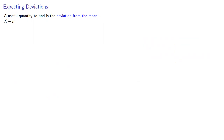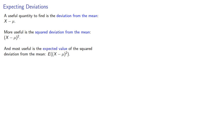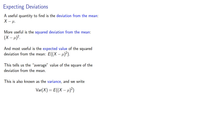There are many quantities we could find, but a useful quantity is the deviation from the mean, x minus mu. More useful is the squared deviation from the mean, x minus mu squared. And most useful is the expected value of the squared deviation from the mean — that's the expectation of x minus mu squared — which tells us the average value of the square of the deviation from the mean. This is also known as the variance, and the standard deviation is the square root of the variance.